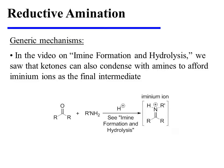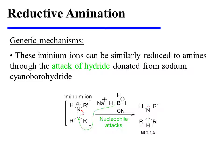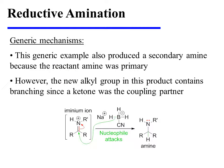In the video on amine formation and hydrolysis, we also saw that ketones can condense with amines to afford aminium ions as the final intermediate in the transformation. These aminium ions can similarly be reduced to amines through the attack of hydride donated from sodium cyanoborohydride. Again, the pi bonding electrons are pushed onto nitrogen to provide the amine product.